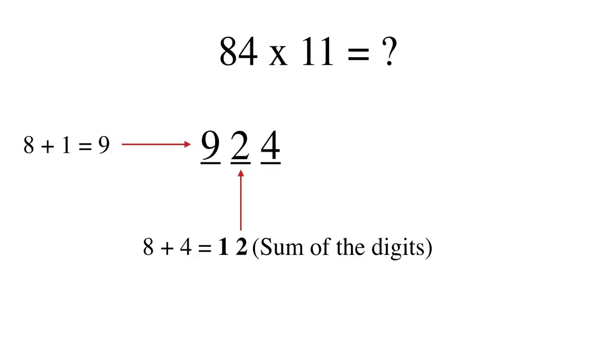So after adding the carry over, we get the answer which is 924. And this is what we do whenever we get a 2-digit sum.